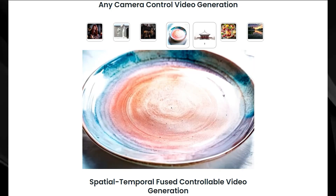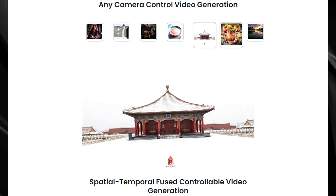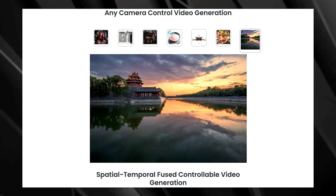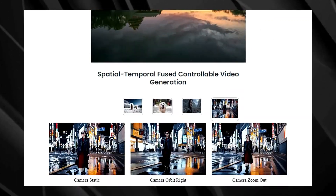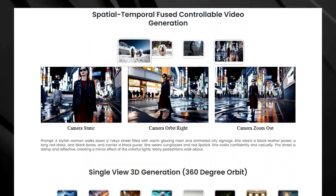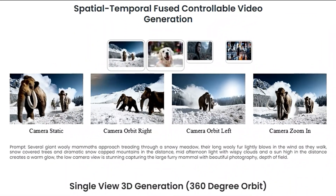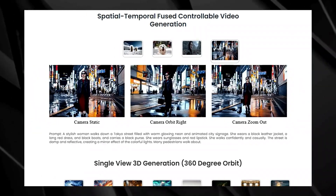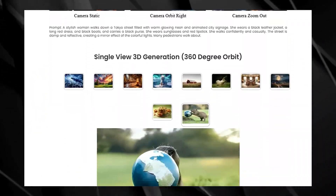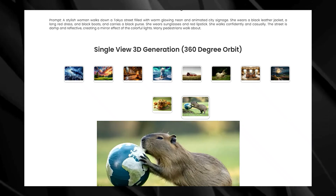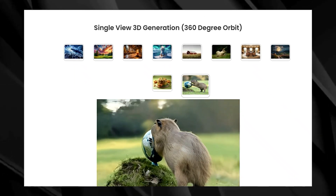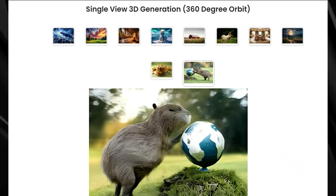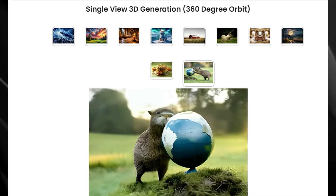But there's more — you can even add movement and create 4D scenes. This means your single image can be transformed into a dynamic, evolving scene. Imagine turning a still picture of a bustling city street into a video where you can fly through the streets, watching the lights change and the people move about. How does Dimension X work? The heart of the system is the ST Director, a special algorithm that controls both the spatial and temporal aspects of the video diffusion process.